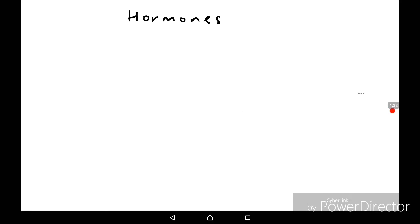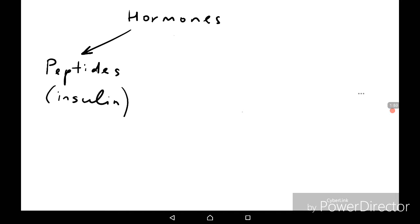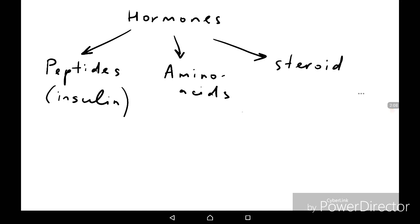Hormones may be classified into several groups in accordance with their chemical structure. They may be peptides — for example, insulin. They may be amino acid derivatives — for example, epinephrine or adrenaline, which is the same. And they may be steroids — for example, testosterone or cortisol. These different types may have different effects upon the functions of the cell.